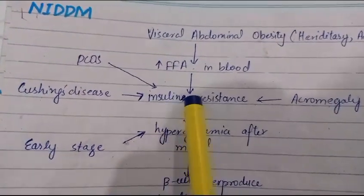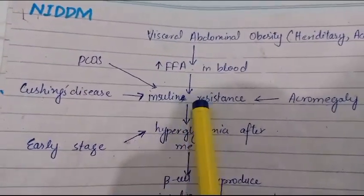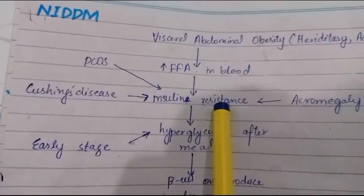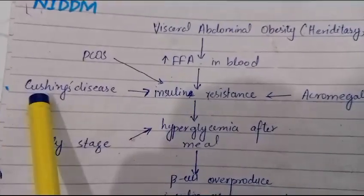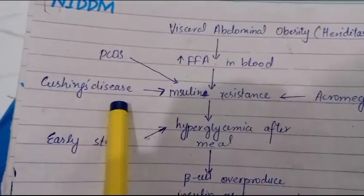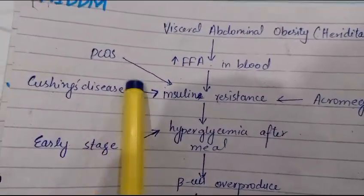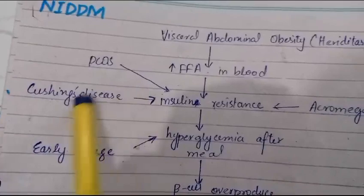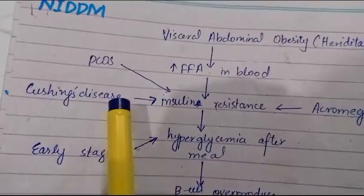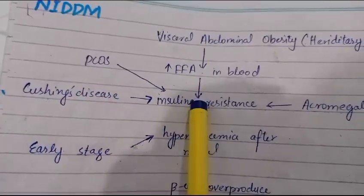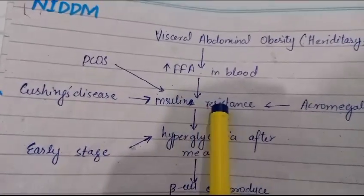With insulin resistance, our body does not respond to insulin. Another cause is Cushing's disease, which is basically characterized by elevated cortisol levels. Cortisol is a hormone that causes insulin resistance in the body.